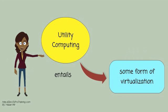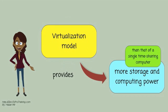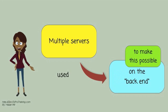Utility computing usually entails some form of virtualization. In the virtualization model, the amount of storage or computing power available is considerably larger than that of a single time-sharing computer. Multiple servers are used on the back end to make this possible.